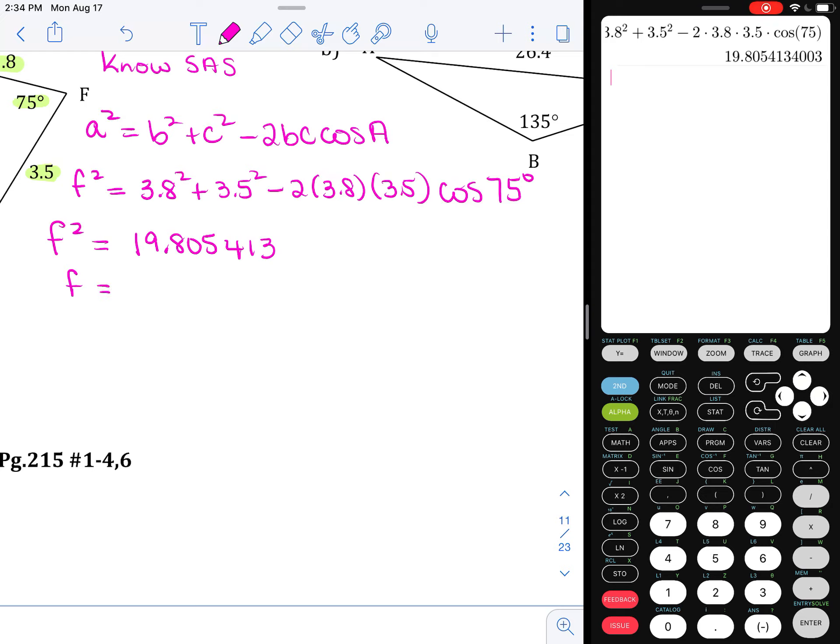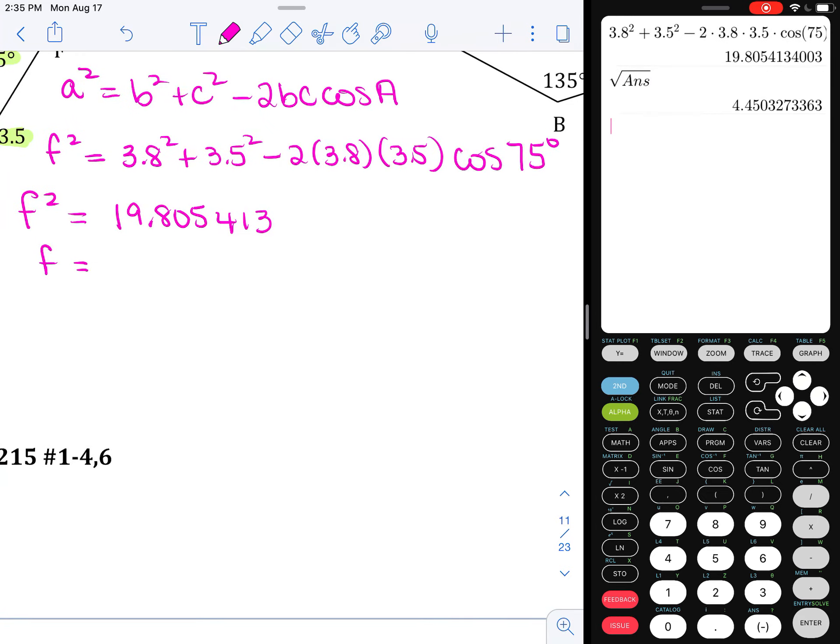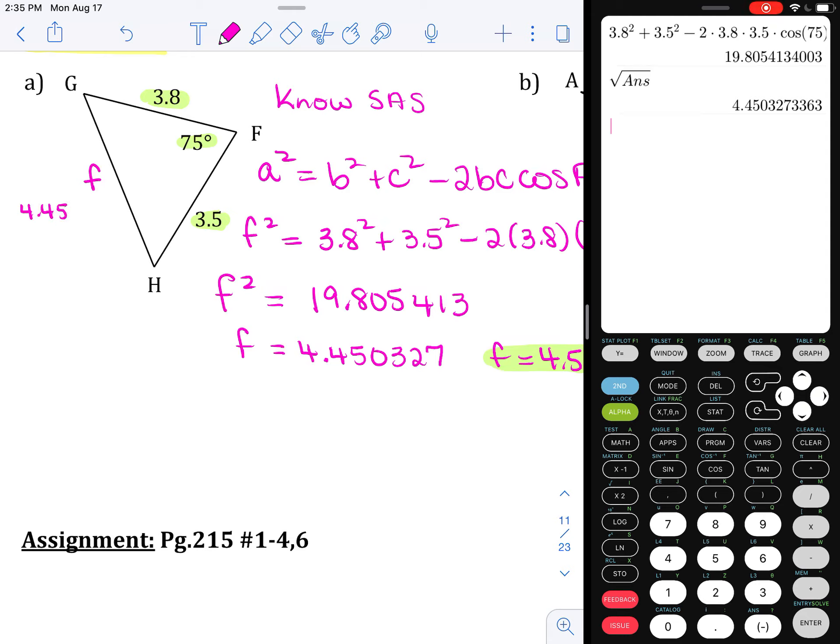But how do we go from F squared to F? We need the square root. So I'm going to copy down a whole bunch of decimal places here. So F is about 4.450327. Now, your answer for F, you will round off to 4.5. Okay, I'll highlight that. But if we have to use side F in another calculation, we're going to use the more exact form. All right, we've found side F.